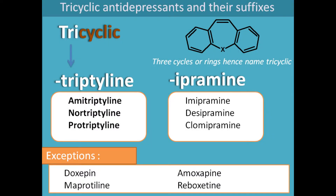With tricyclic antidepressants, notice that the drug names all end in '-ine' — such as tryptoline and ipramine. Whenever you see a medication ending in '-ine' and your patient has altered level of consciousness, is not acting right, or possibly has a fatal dysrhythmia, you have to keep in mind the possibility of a tricyclic antidepressant (TCA) overdose.